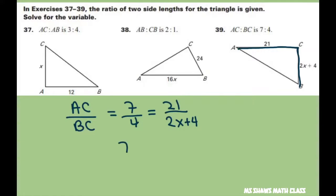So we're going to cross multiply. And you have 7 times 2X plus 4 equals 4 times 21. And simplify. You get 14X plus 28 equals 84.